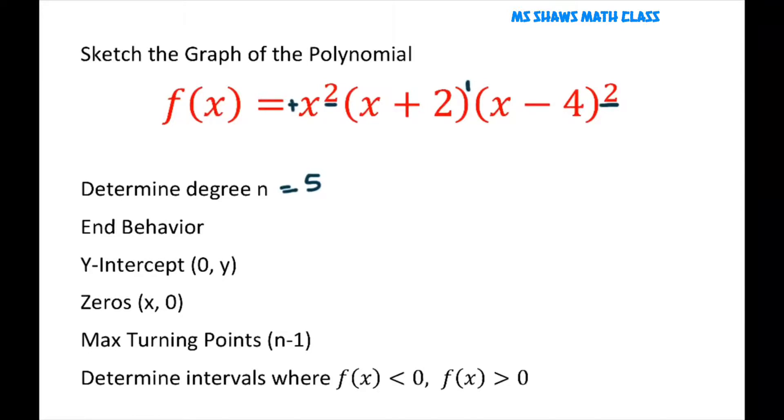Let's do our y-intercept. Our y-intercept is when x is 0. So when you plug in 0 you're going to get 0 squared times 2 times negative 4 squared and that equals 0.